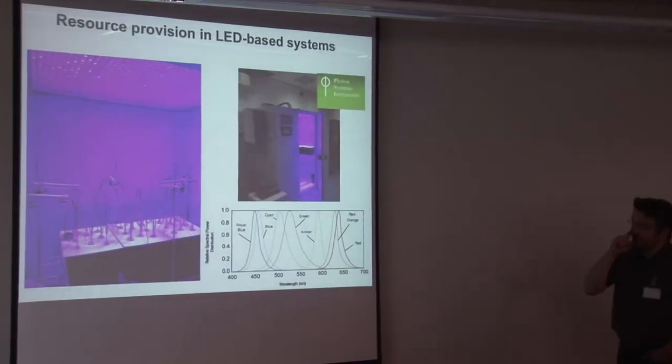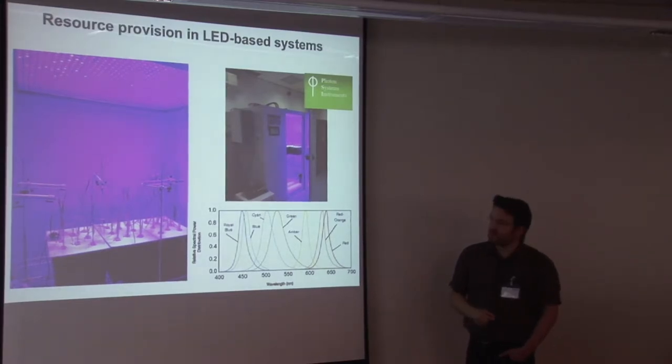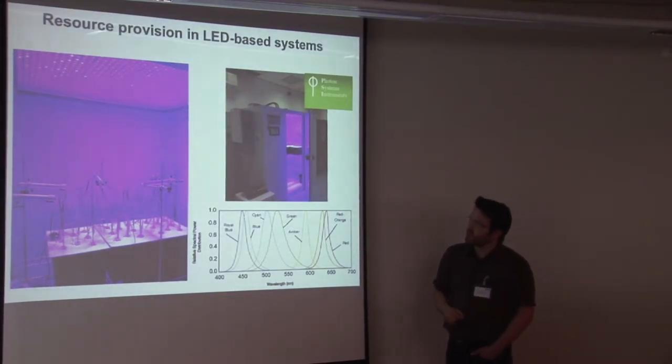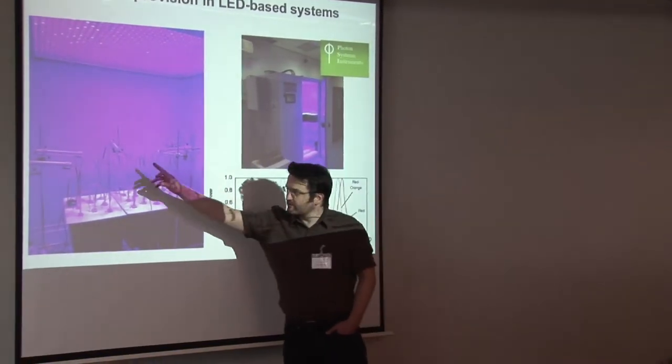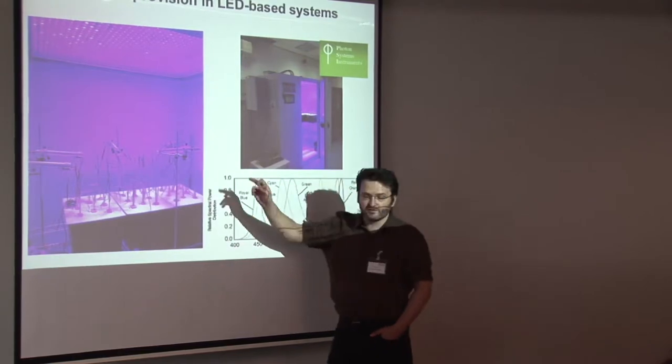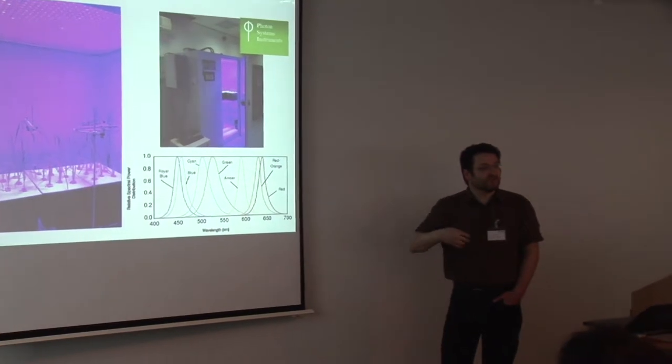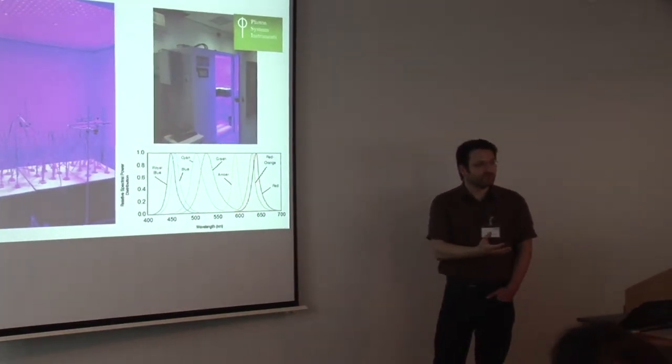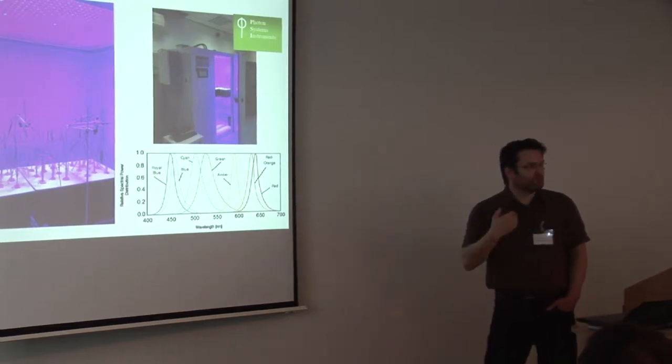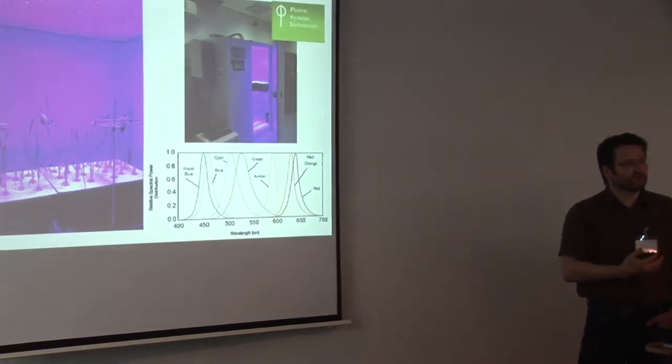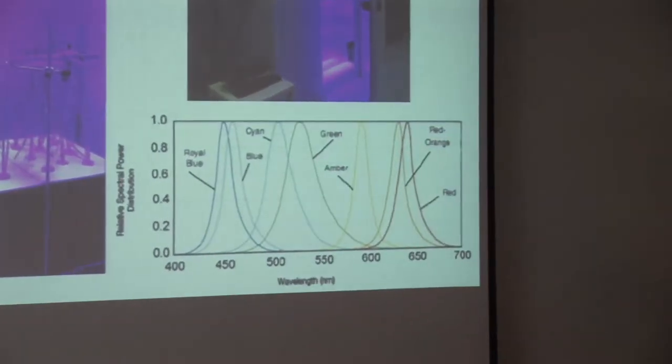So we use an LED-based cabinet made by Photon Systems in the Czech Republic. It provides blue and red light. We also have chlorophyll fluorescent sensors. So chlorophyll fluorescent sensors measure the amount of light given off by chlorophyll. Chlorophyll gives off a certain amount of light, and by measuring the proportion of light that's re-emitted from chlorophyll as fluorescence, we can measure photosynthetic efficiency very, very rapidly.